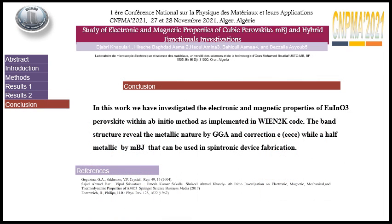In conclusion, in this work we have investigated the electronic and magnetic properties of EuNiO3 perovskite with an ab-initio method as implemented in the Wien2K code. The band structure reveals the metallic nature by GGA and GGA+U correction, while a half-metallic character is found using MBJ, which can be used in spintronic device fabrication.